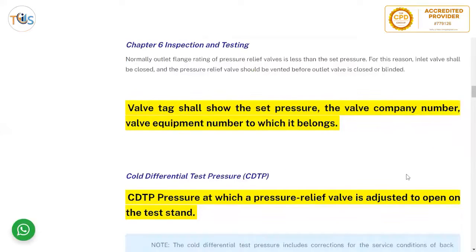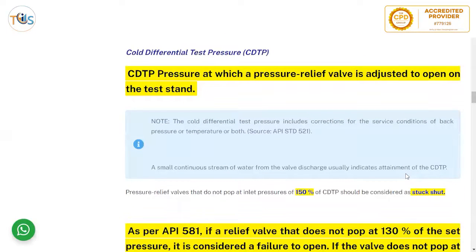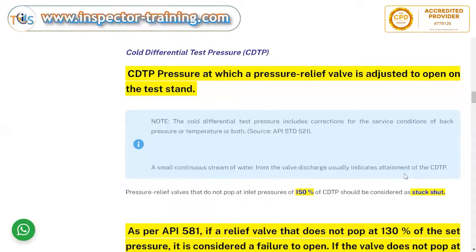Chapter 6 covers inspection and testing. Normally the outlet flange rating of pressure relief valves is less than the set pressure. For this reason the inlet valve shall be closed and the pressure relief valve vented before the outlet valve is closed or blinded. The valve tag shall show the set pressure, valve company number, equipment number to which it belongs, and the Cold Differential Test Pressure (CDTP). CDTP is the pressure at which the pressure relief valve is adjusted to open on the test stand.